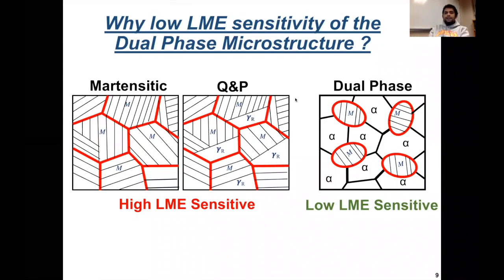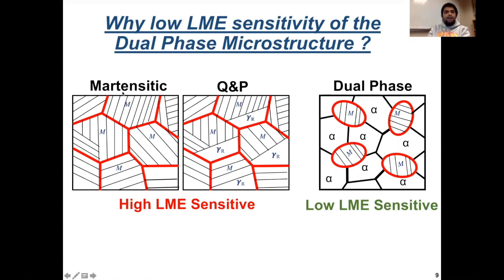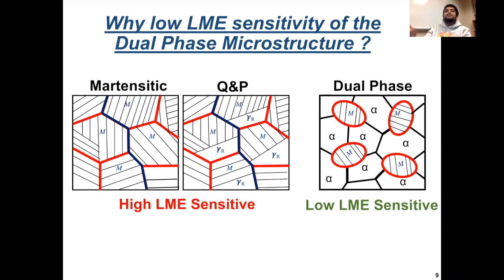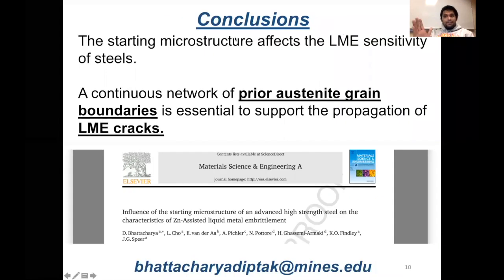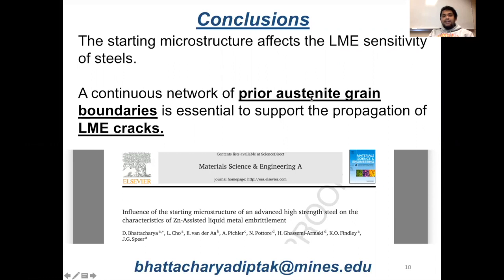We now understand why the dual-phase microstructure was more resistant to LME cracking. The high LME-sensitive martensitic and Q&P microstructures were generated through full austenitization. Therefore, in these microstructures we had a continuous network of prior austenite grain boundaries — the red boundaries — that allowed an easy pathway for LME crack propagation. On the other hand, the dual-phase microstructure was generated through intercritical annealing or partial austenitization. In this microstructure, the prior austenite grain boundary area fraction was lower, and more importantly, the prior austenite grain boundaries are disconnected from one another. Therefore, even if an LME crack forms, the crack will not be able to propagate. So in conclusion, the starting microstructure definitely affects LME susceptibility, and a continuous network of prior austenite grain boundaries is essential to support the propagation of LME cracks.